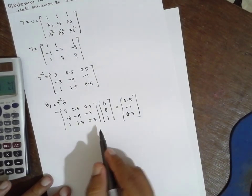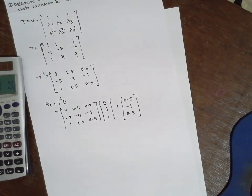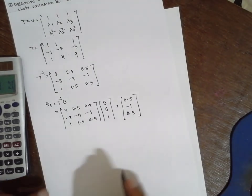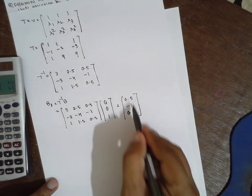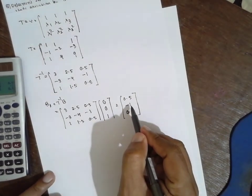Now since no element of T⁻¹B is zero — there is no zero element — the system is said to be controllable.